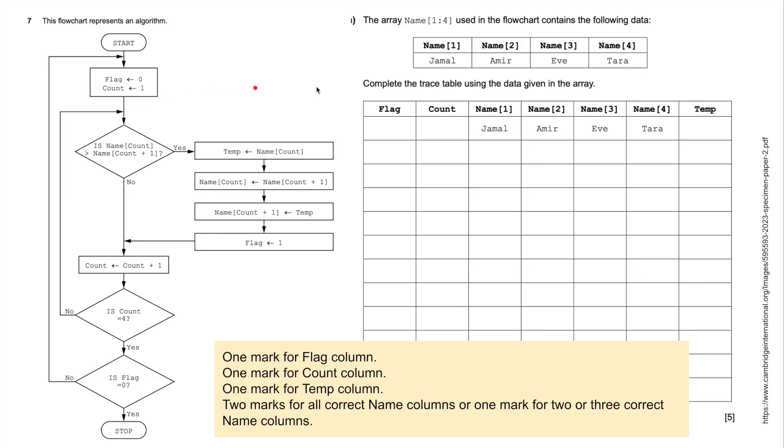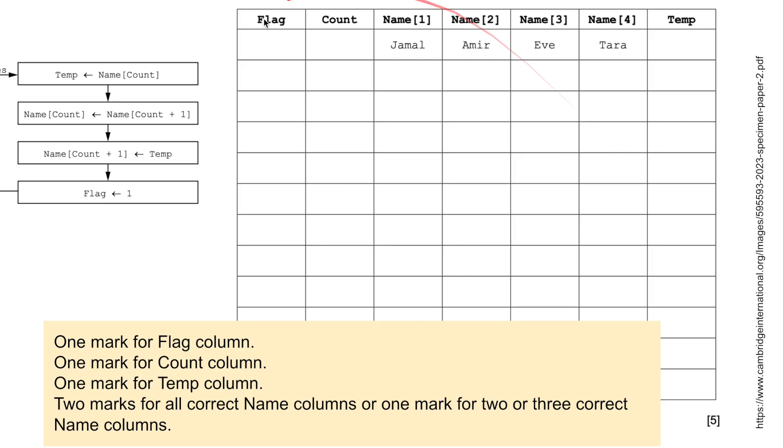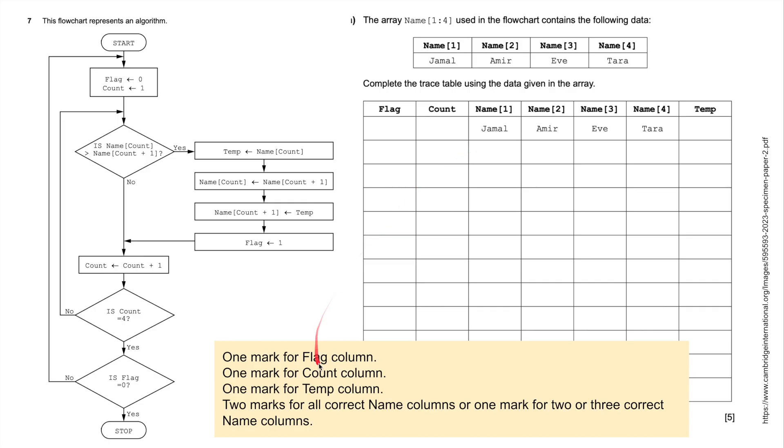So we're going to start with question seven, and here we have a trace table. Complete the trace table using the data given in the array. We've got an array here with four names in it: Jamal, Amir, Eve, and Tara. We're going to use this flowchart to find out how we populate this. We've got seven columns. One mark for the flag column being correct, one mark for the count column being correct, one mark for the temp column being correct, and then two marks making sure that names appear in each of these columns. So let's start.